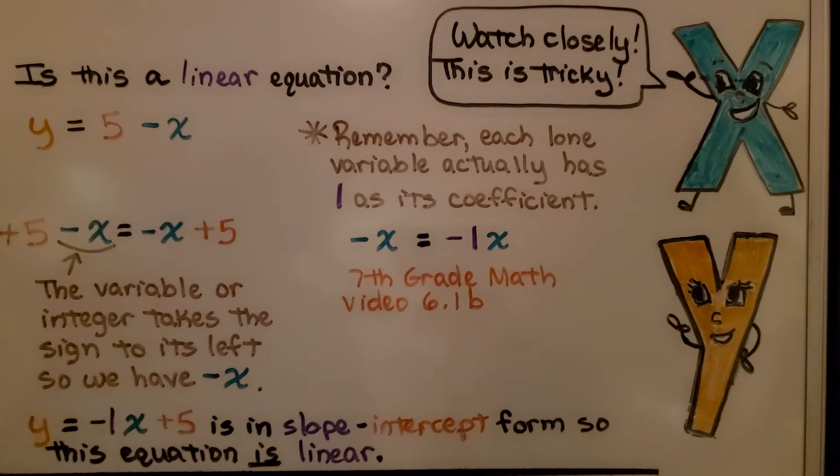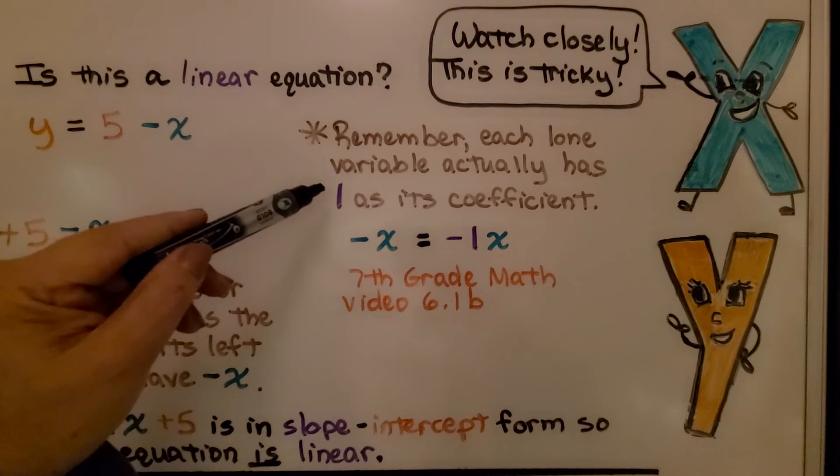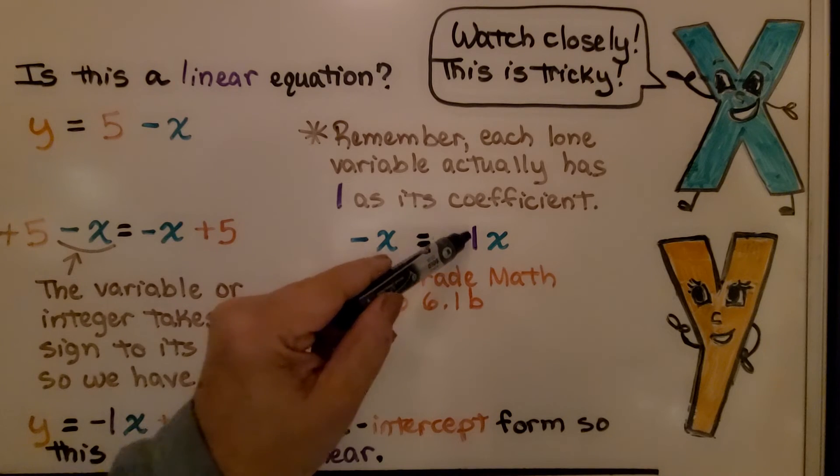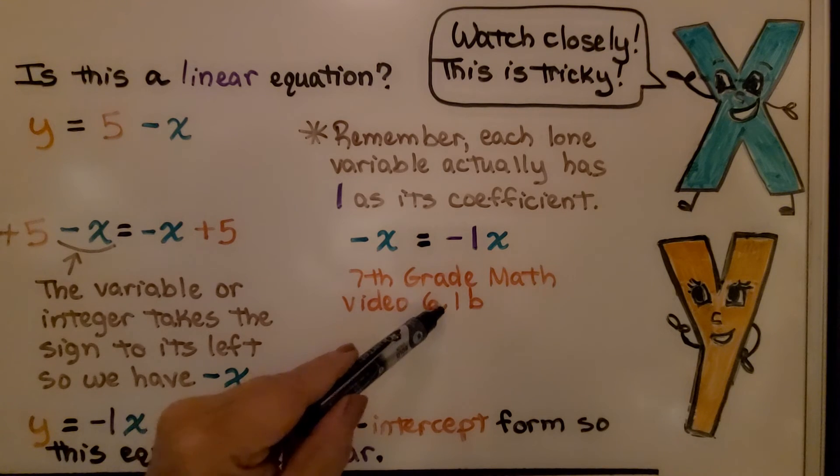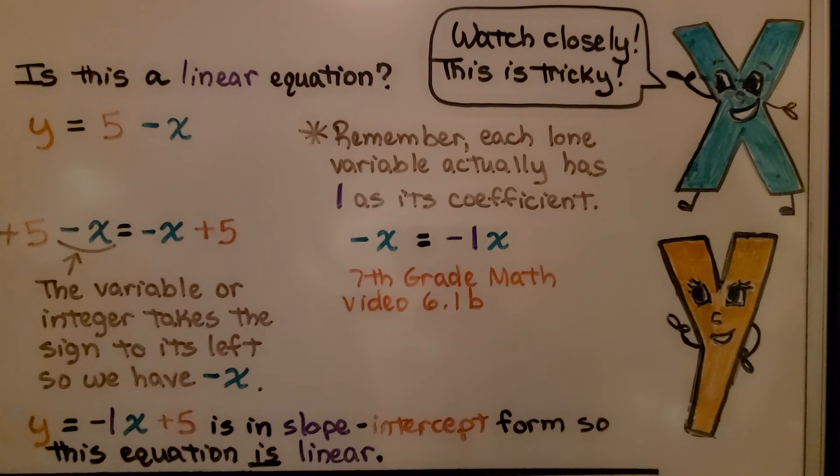Do you remember that each lone variable actually has 1 as its coefficient? So negative x is equal to negative 1x. Well now look, we have a slope and we have our x. That was in 7th grade math video 6.1b. This means we can rearrange this equation. So it's a negative x plus 5. We just move this plus 5 over here. So we have y equals negative 1x plus 5 and that is in slope-intercept form.